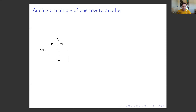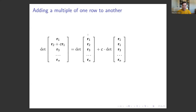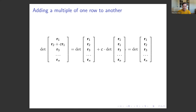What about adding a multiple of one row to another? From linearity, the determinant of a matrix where row 2 is replaced by R2 plus C times R1 equals det(original) plus C times det(matrix with R1 repeated in rows 1 and 2). But that second matrix has two repeated rows, so its determinant vanishes. Therefore, adding a multiple of one row to another does not change the determinant.